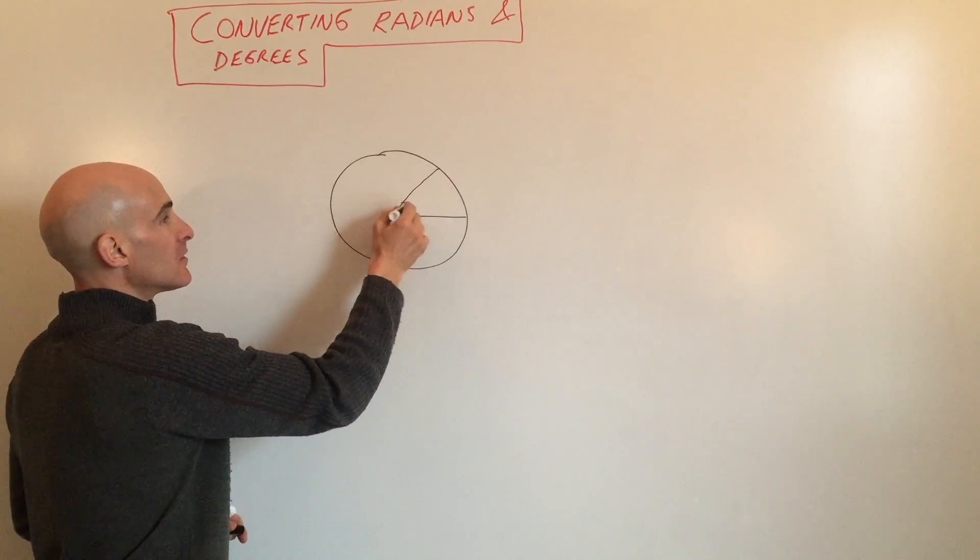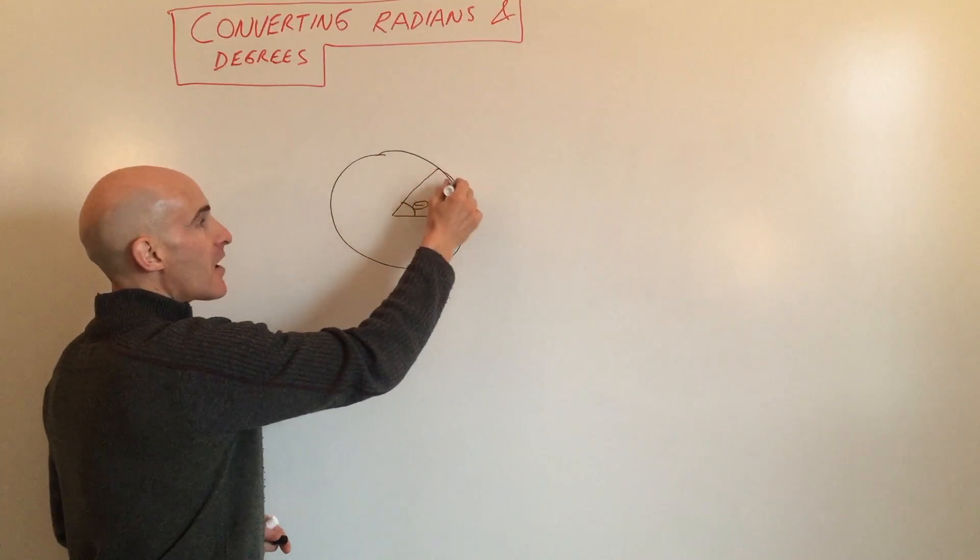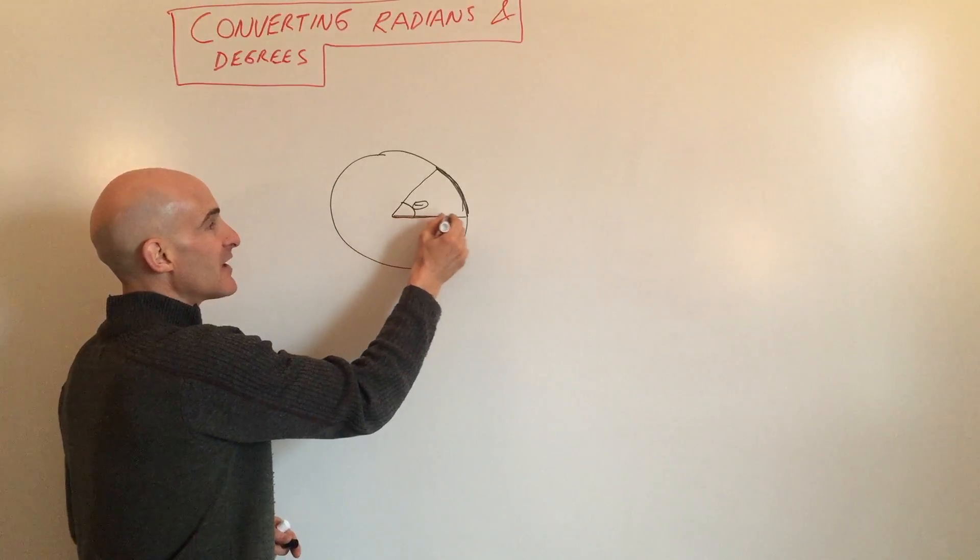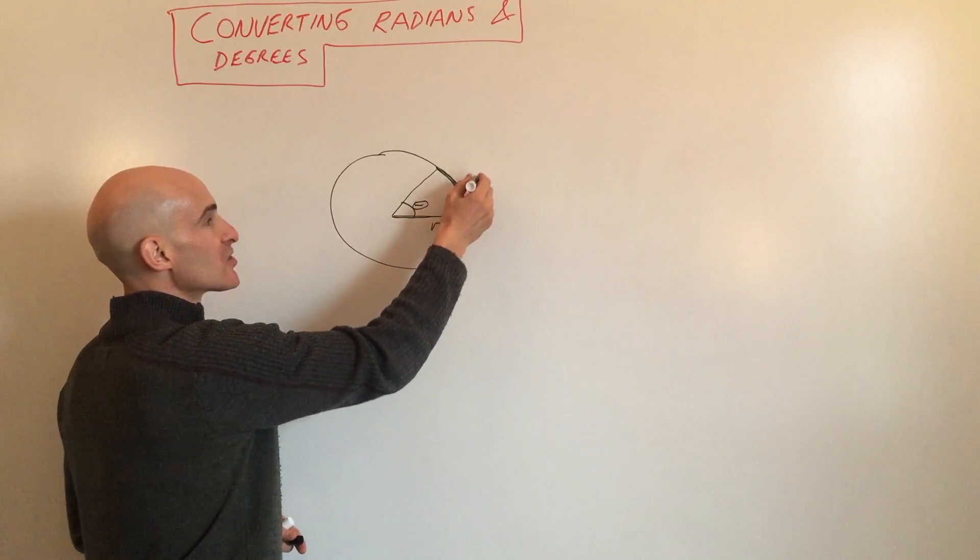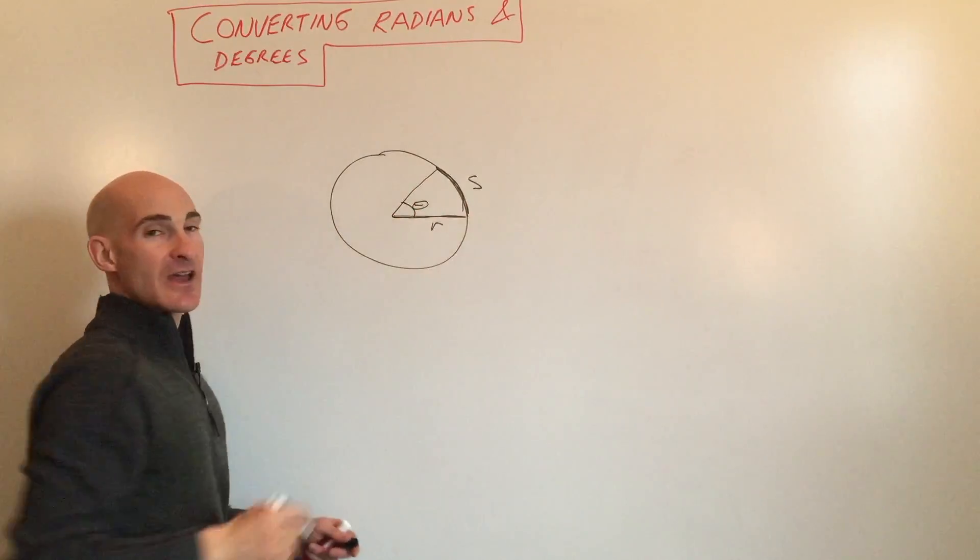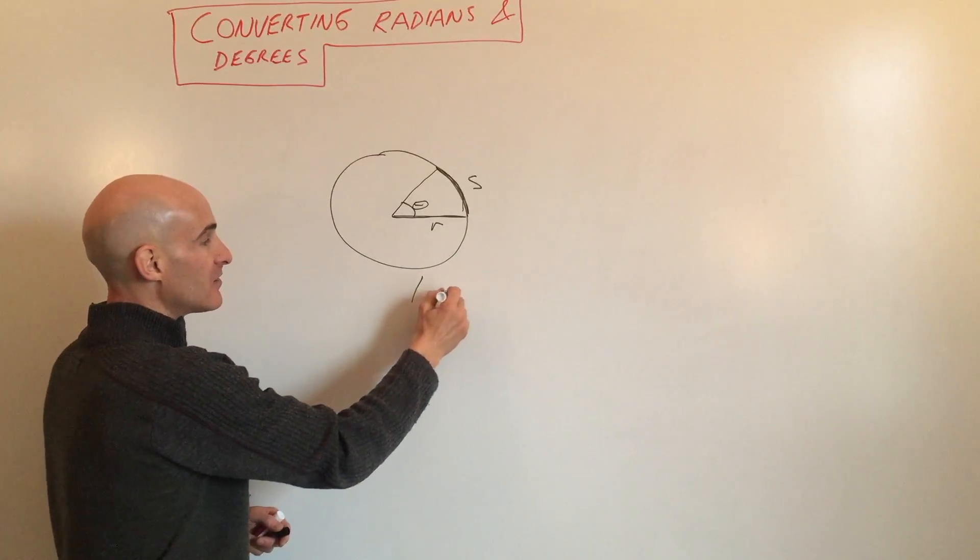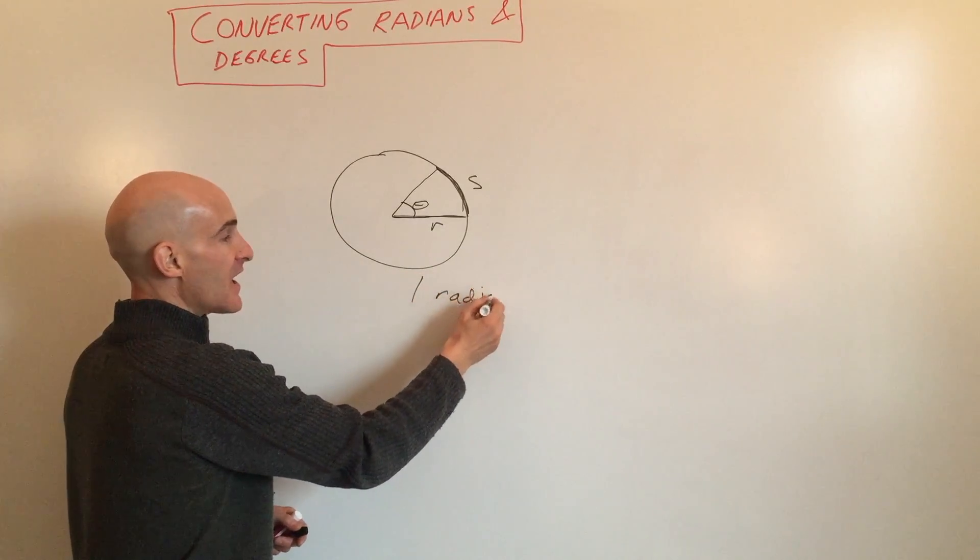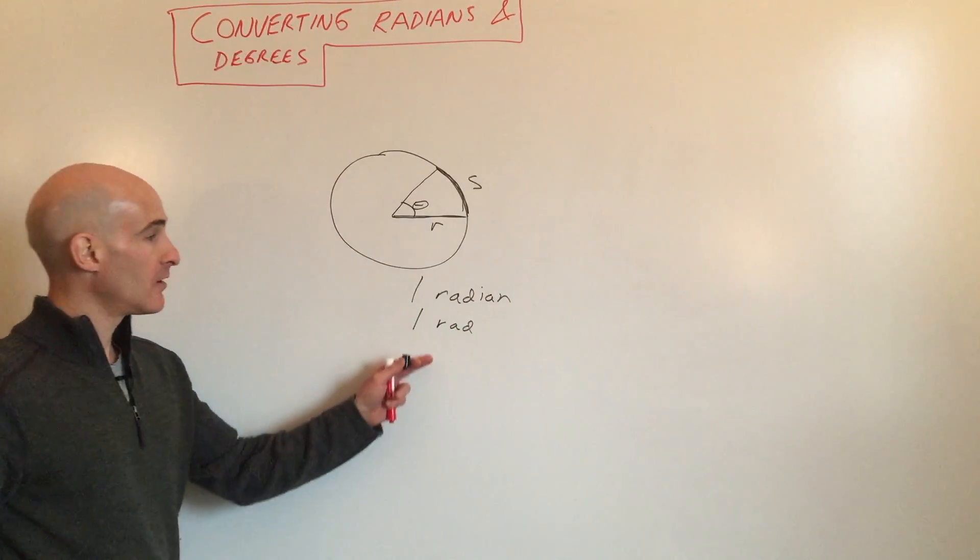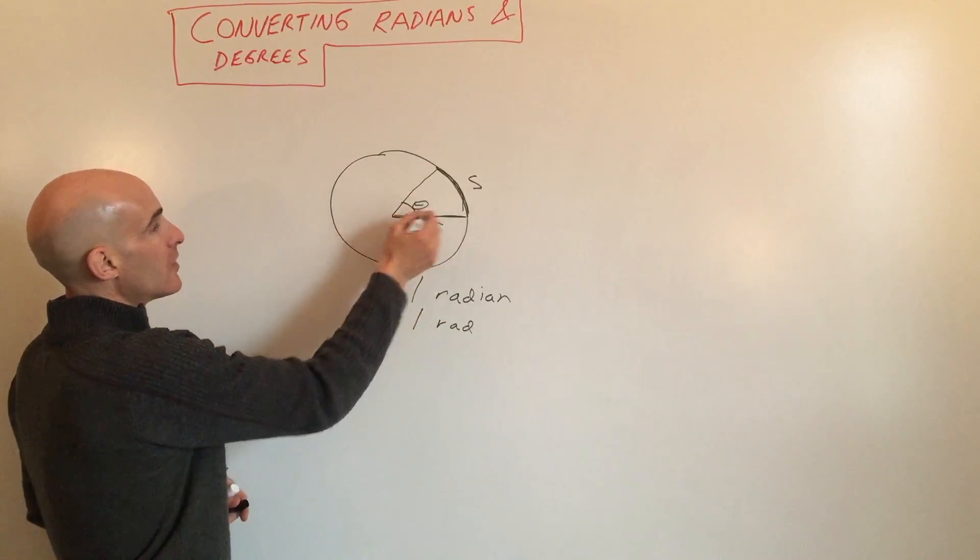If this arc length, the length of that curve segment, is the same length as the radius, we'll just call this r and s. If this arc length is the same length as that radius, this angle here is called one radian, abbreviated as 1 rad.